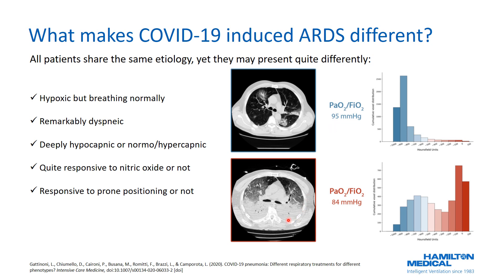The same patient a few days later had a CT scan showing a significant portion of the lung that is apparently consolidated, with areas of ground glass opacity and still a small portion of the lung that is well aerated on both sides. With this CT scan, it would be expected to have a P/F ratio of 84, but the P/F ratio did not differ much from the beginning. This patient had a well-aerated lung tissue along with severe hypoxemia, and the only explanation is that something went wrong in the pulmonary circulation and pulmonary perfusion.